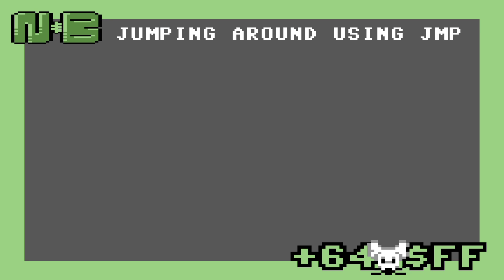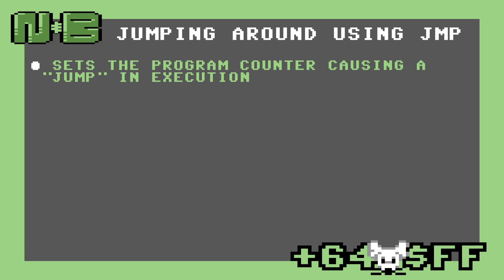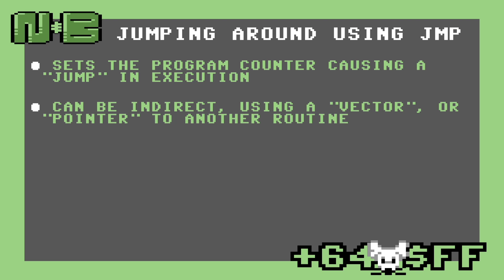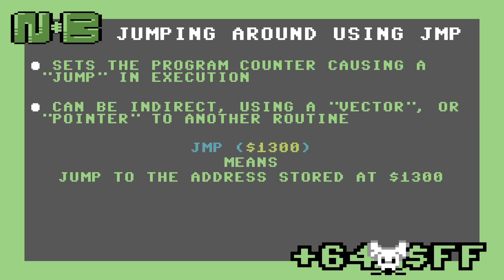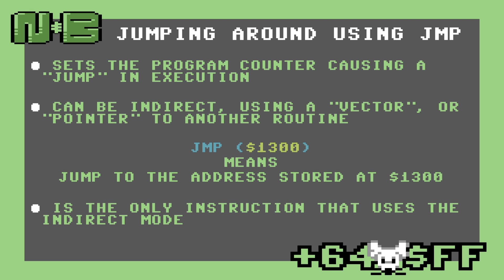The first instruction we'll cover is JMP. This instruction sets the program counter directly, which causes a jump in execution. The operand can be indirect, using a vector or pointer to another routine. In other words, the address to jump to is stored at the operand's location. For example, this JMP 1300 instruction means jump to the address stored at location 1300. The JMP instruction is the only instruction that uses this indirect mode.